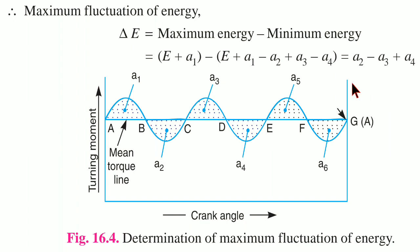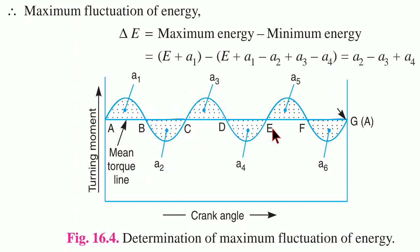In this figure, the points are A, B, C, D, E, F, and G. Note that at points A and G the energy is only E. At point B, energy is E plus A1. At point C, energy is E plus A1 minus A2. At point D, energy is E plus A1 minus A2 plus A3. At point E, energy is E plus A1 minus A2 plus A3 minus A4. At point F, energy is E plus A1 minus A2 plus A3 minus A4 plus A5. At point G, energy is E plus A1 minus A2 plus A3 minus A4 plus A5 minus A6, meaning only E remains.